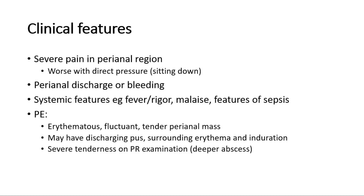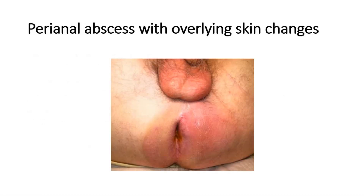On examination, there will be an erythematous, fluctuant, tender perianal mass, which may be discharging pus or have surrounding erythema and induration. Deeper abscesses may not have any obvious external signs, however produce severe tenderness on PR examination. This is a picture showing a perianal abscess with overlying skin erythema.